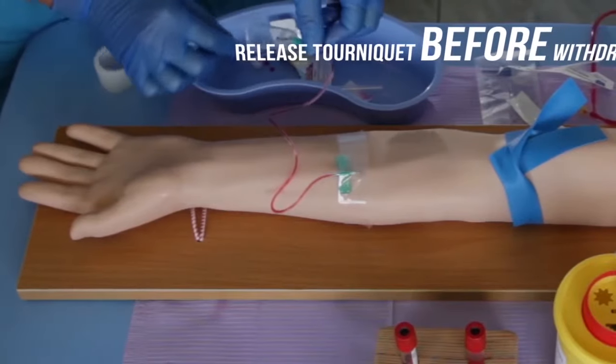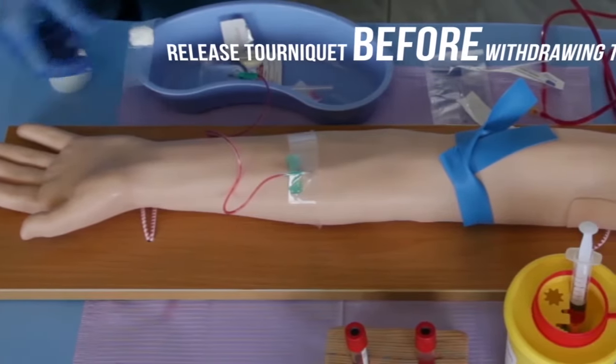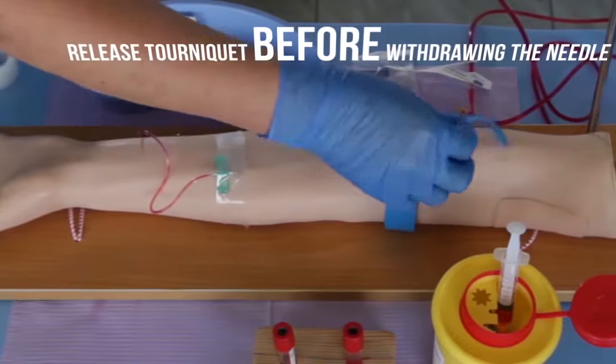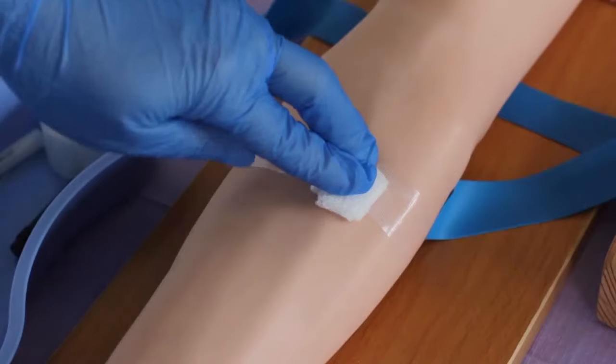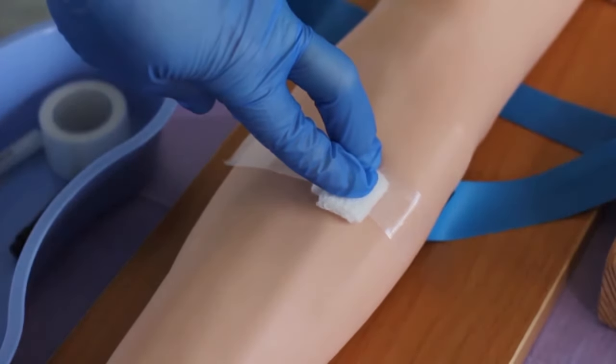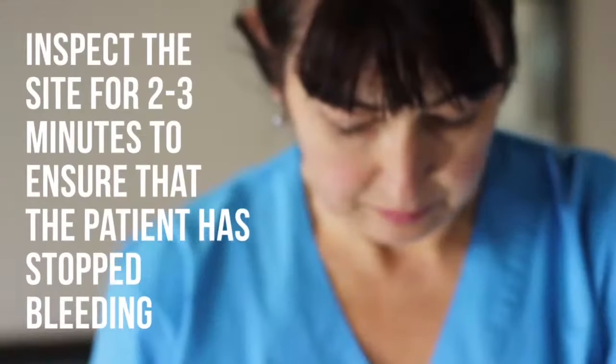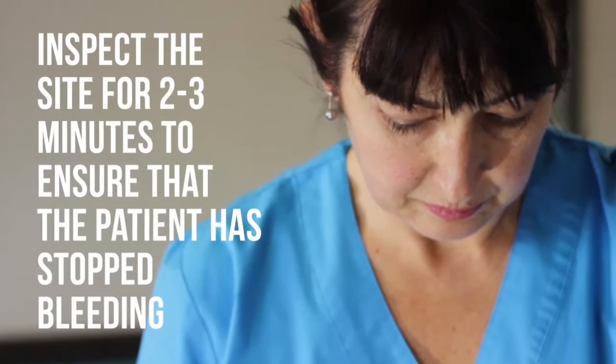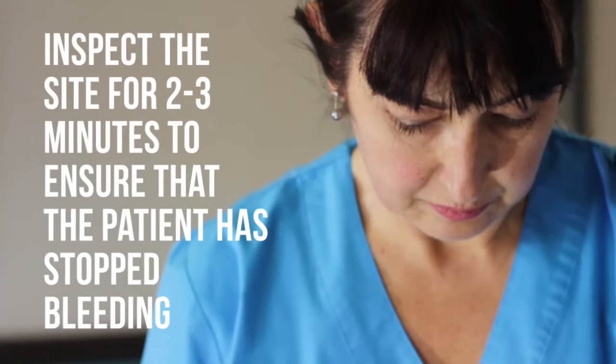Once sufficient blood has been collected, release the tourniquet before withdrawing the needle. Withdraw the needle gently and place a clean gauze or dry cotton wool ball with strapping to the site. Apply with firm pressure to achieve hemostasis and avoid a hematoma. Inspect the site after 2 to 3 minutes to ensure that the patient has stopped bleeding.